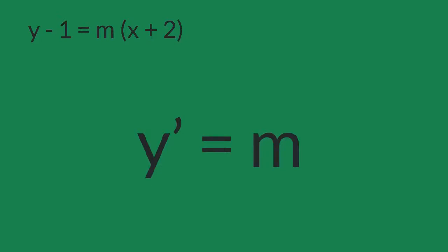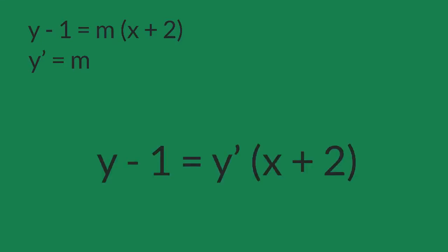As usual, we look back to the last equation and replace m by y prime. Hence, this is the differential equation of family of straight lines passing through the point negative 2, 1.